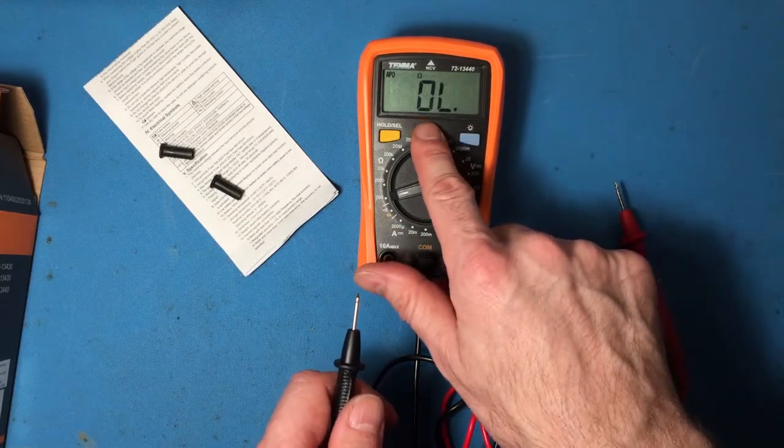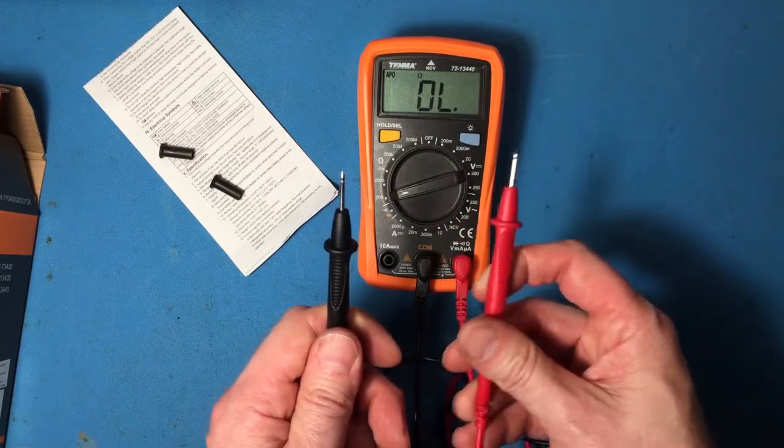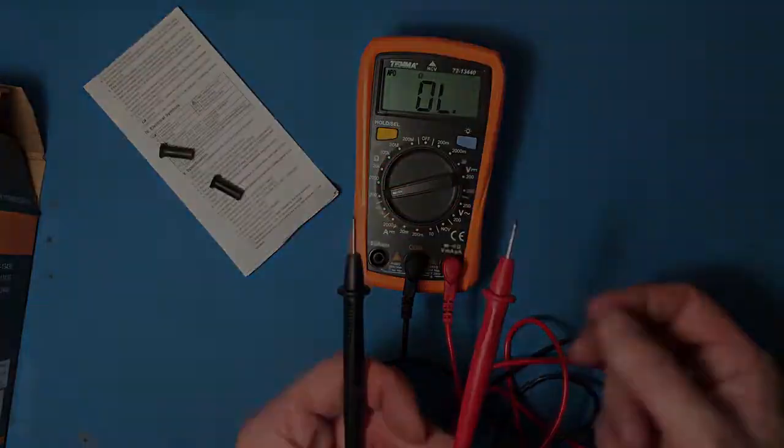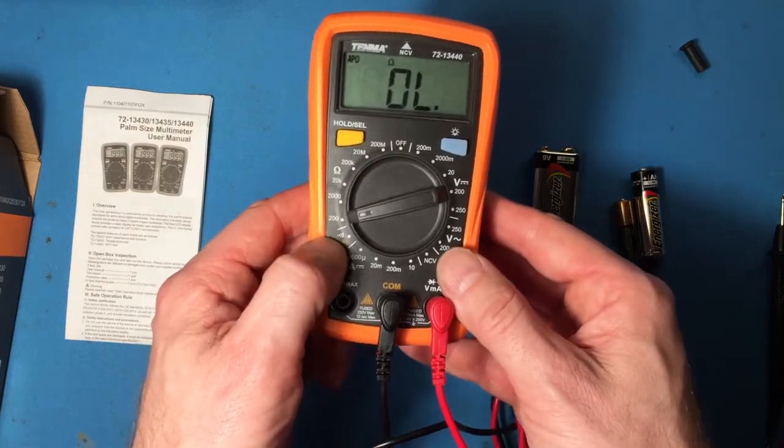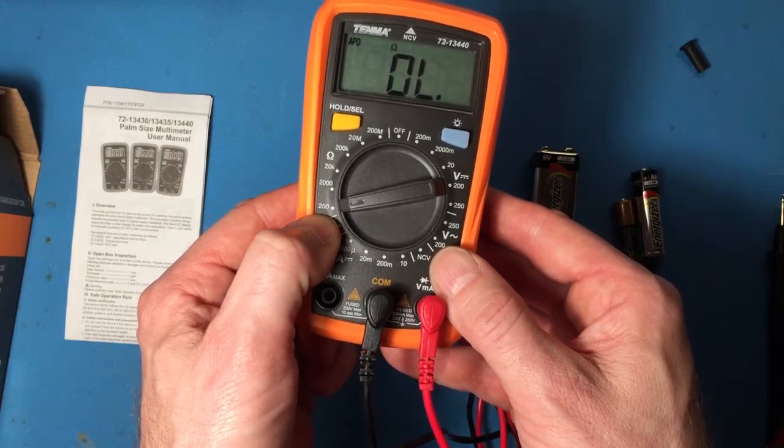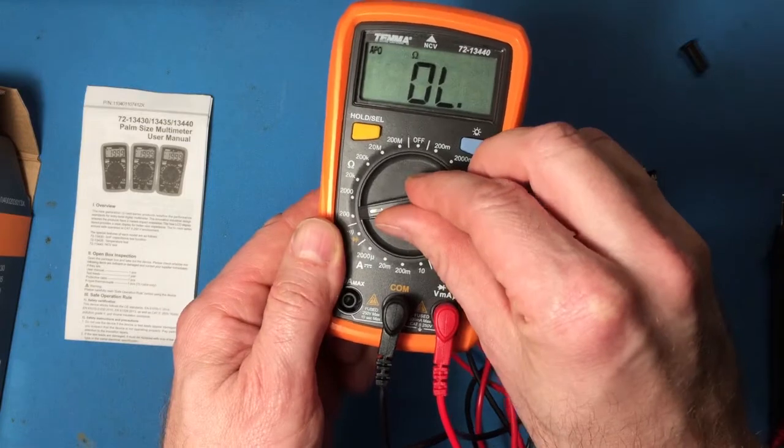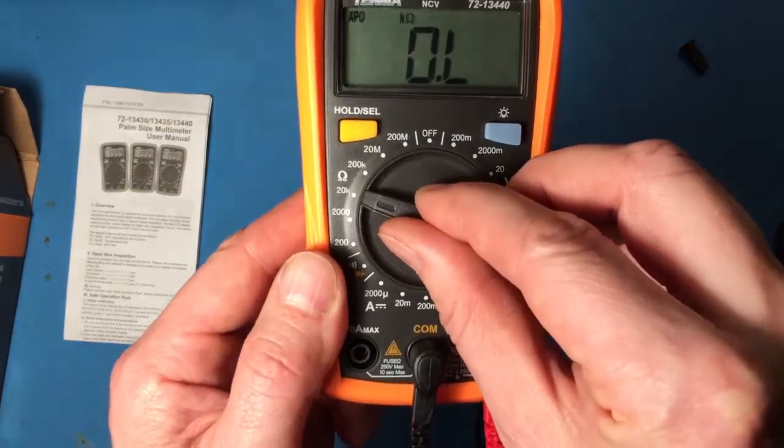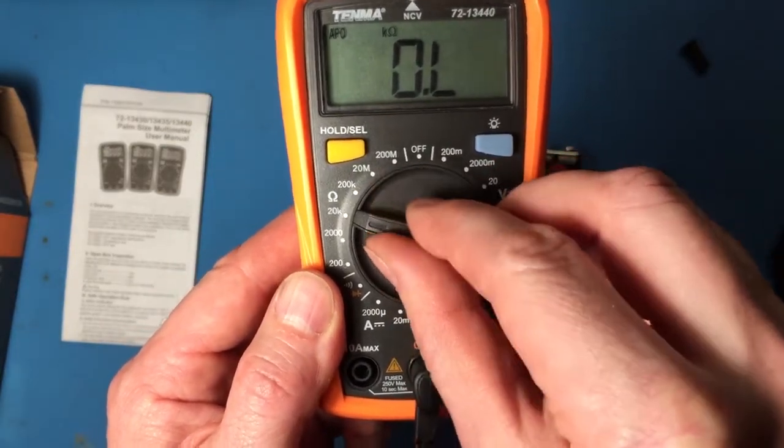So the OL right there stands for overrange or overload, and that makes sense because when the leads aren't touching, from the point of view of the meter, there is an infinite amount of resistance between them. So before we talked about measuring ohms, that's the setting here on the left with the omega, and it has multiple ranges. Down here this says that this can measure any resistance that's less than 200 ohms. On this setting it'd be any resistance that's less than 2,000 ohms. On this setting less than 20 kilo ohms or 20,000 ohms, and so on and so forth up to 200 mega ohms.